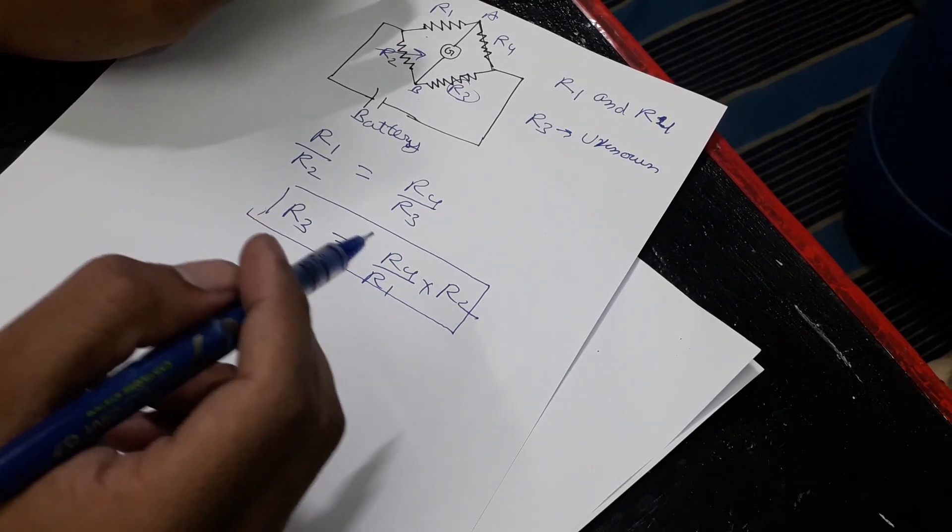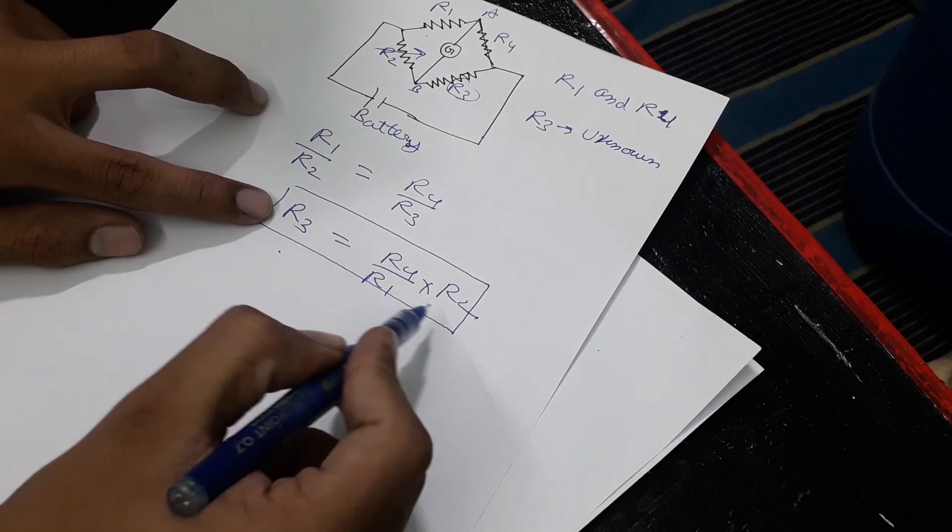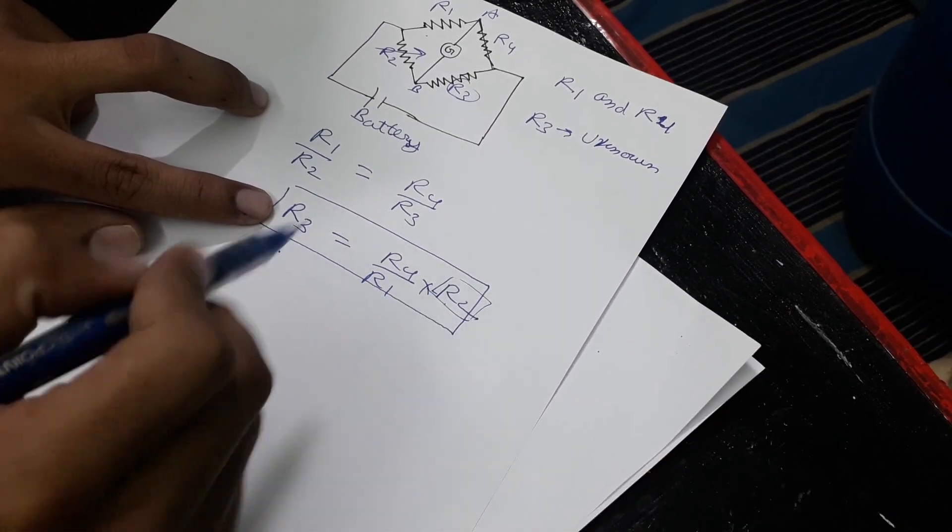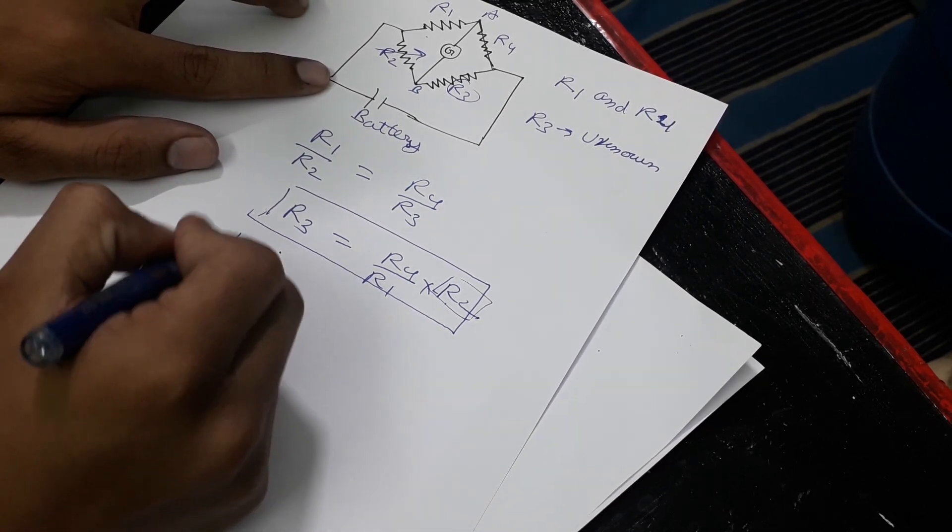At the point we get zero current, we will use this formula with the value of R2, which is the variable resistance, to get the value of R3, which is the unknown resistance.